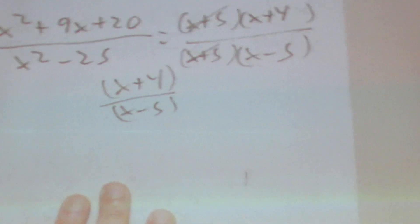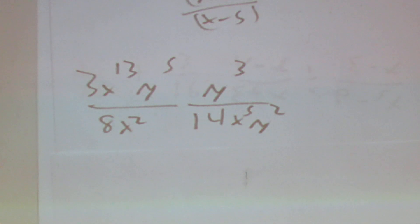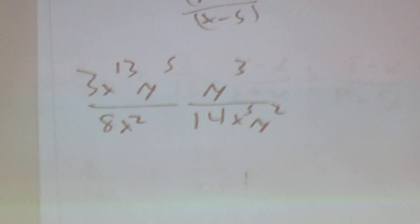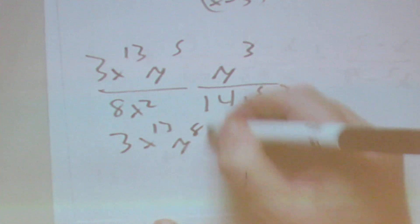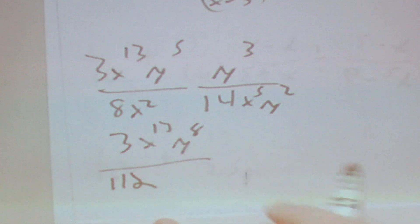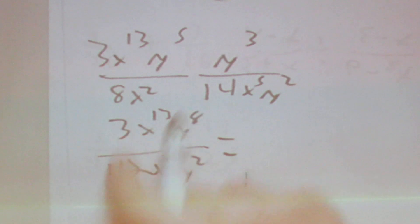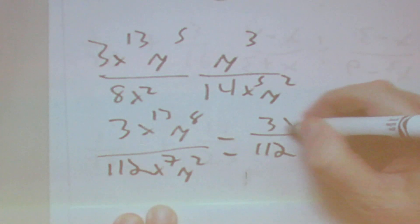Next, we have 3x to the 13th times y to the 5th over 8x squared, times y to the 3rd over 14x to the 5th y squared, and we need to simplify. We multiply across: 3x to the 13th stays, y to the 5 plus 3 is y to the 8th. On the bottom, 8 times 14 is 112, x squared times x to the 5 is x to the 7th, and y squared. Now simplifying: x to the 13 over x to the 7 leaves x to the 6 on top.